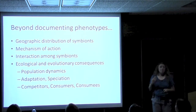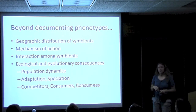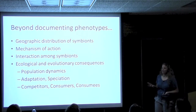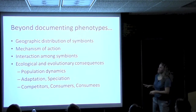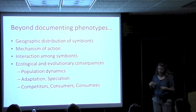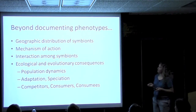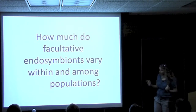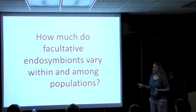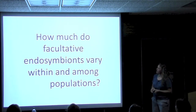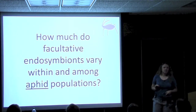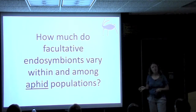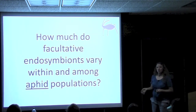While my interest and background is very ecological — I really want to get to ecology and interspecific interactions — I'm going to argue that before we can really get to these interesting bits, we need to know a little more upstream about what's going on. This basic question about geographic distribution is actually an important one. The first question I'll be addressing today is: how much do facultative endosymbionts vary within and among populations? I'll be addressing this particularly within aphid populations, which we know quite a bit more about than many other groups, but we still don't know that much.